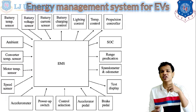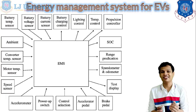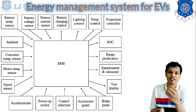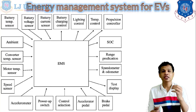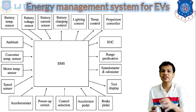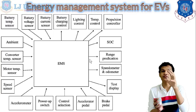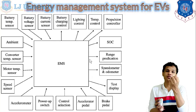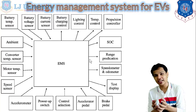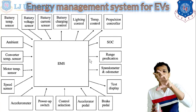The speed sensor senses the speed of the vehicle or wheels. The accelerometer senses the vehicle's acceleration. The power-up switch detects power applied to the vehicle. The control selection sensor controls the propulsion system. Whenever the driver applies force on the brake pedal or accelerator pedal, that force is sensed by the sensor, which then draws energy from the battery or energy storage device and supplies it to the electric motor.